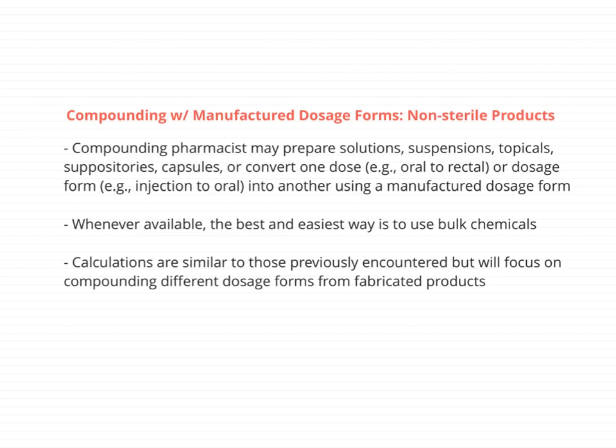When available, the best and easiest thing you can do is to use bulk chemicals. Now, when we do these calculations, they may seem daunting, but they're actually pretty similar when we break them down to what we've done before. They're very similar to previously encountered calculations, and today we'll focus on compounding different dosage forms from fabricated products.